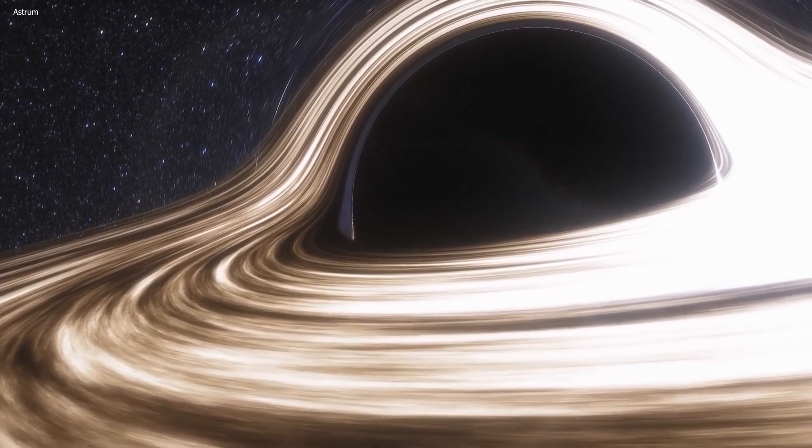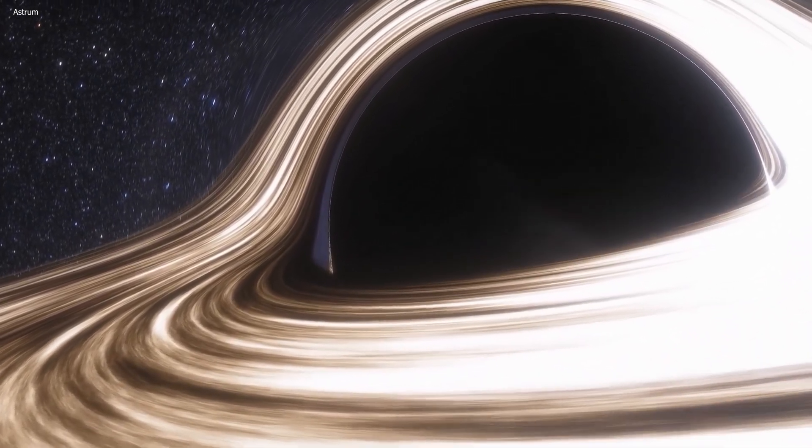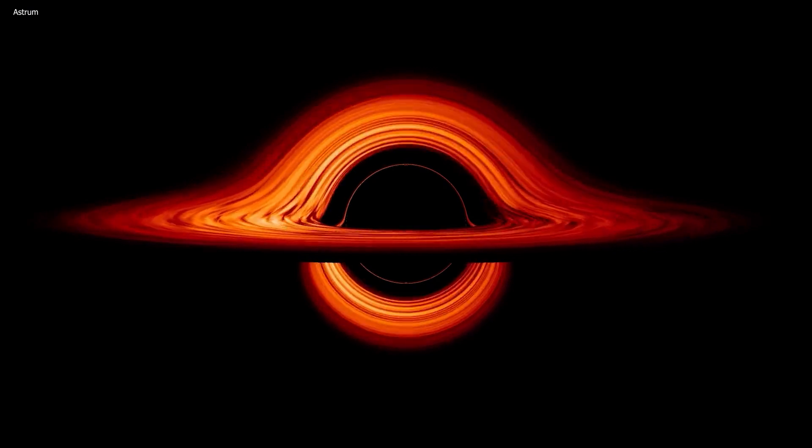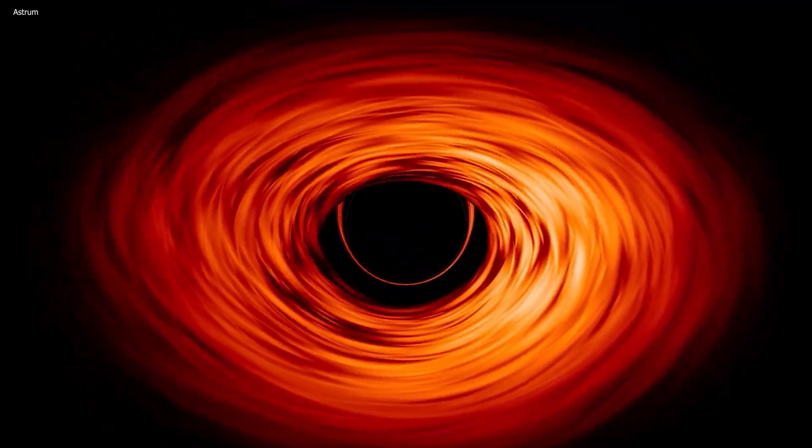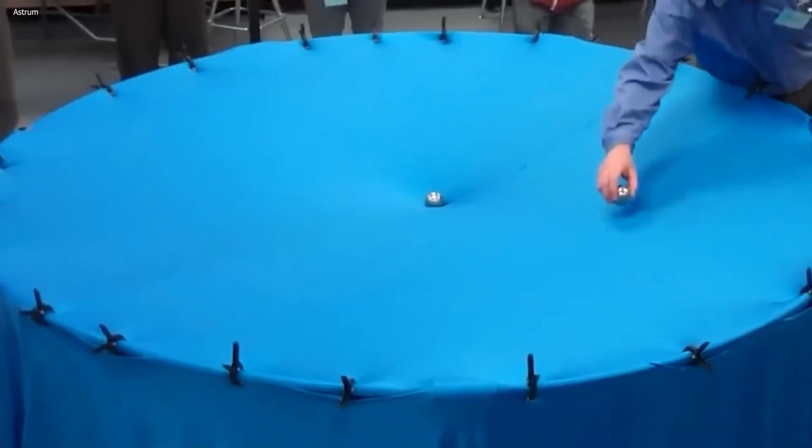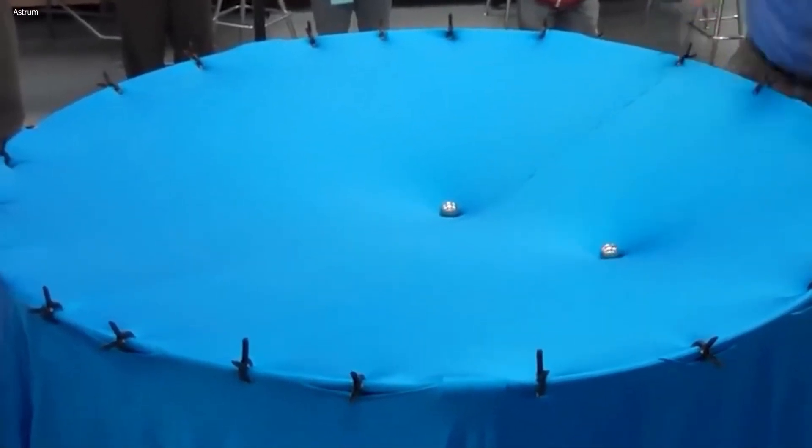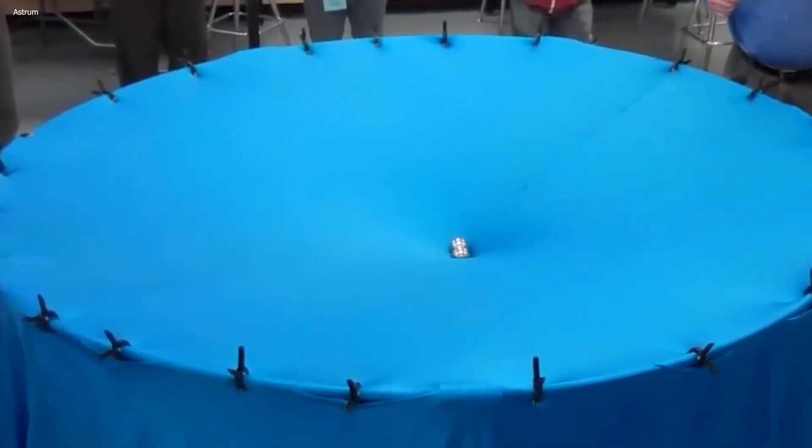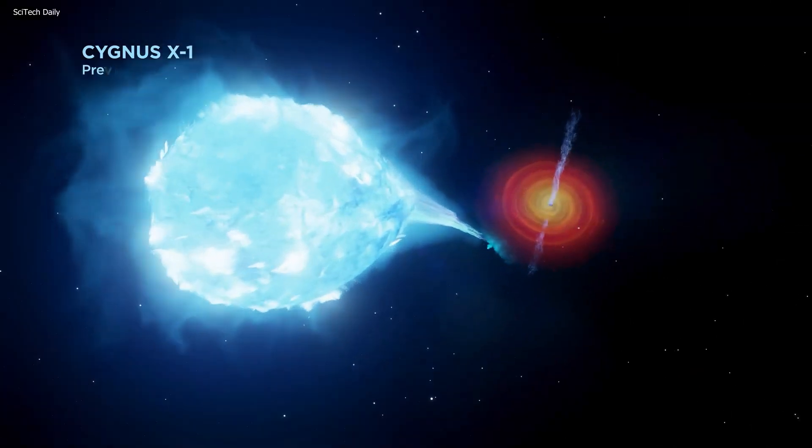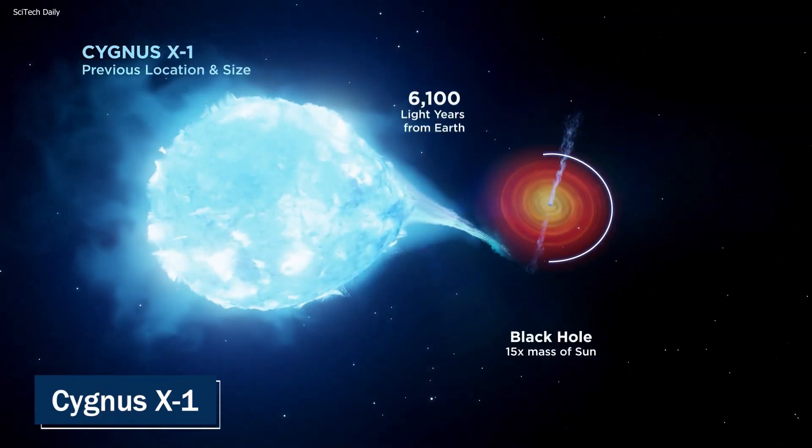But before we can get to the current discovery, we're going to need a bit of background. Even though most of us grew up knowing that black holes were a real thing, there was a time when they were just a theory. All until the first black hole was discovered in the late 1960s, known as Cygnus X-1.